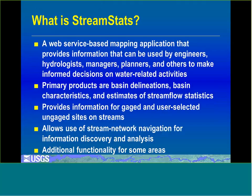StreamStats is a web service-based mapping application that provides information that can be used by engineers, planners, hydrologists, managers, and others to make informed decisions on water-related activities. Primarily, what StreamStats provides are basin delineations, computed basin characteristics, and estimates of stream flow statistics. It provides that information both for gauged and for user-selected, ungauged sites on streams. It also allows use of stream network navigation for information discovery and analysis.